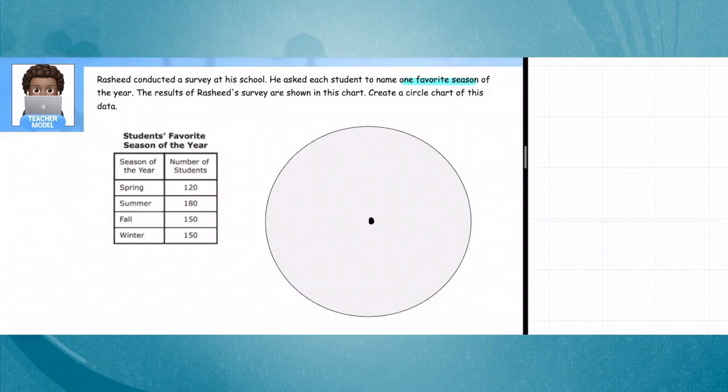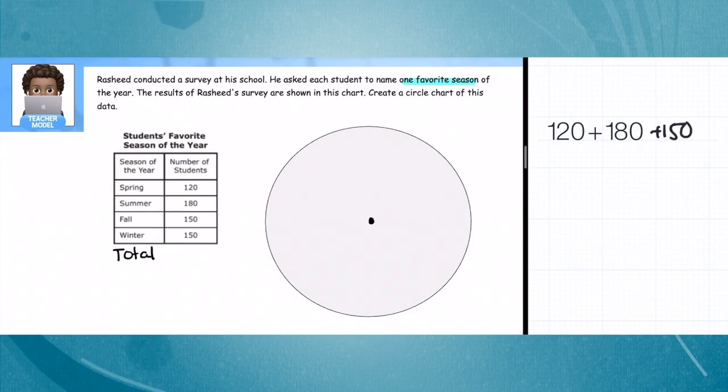We can see for spring, summer, fall, winter—all four—and we see all of his answers in the number of students. The first thing we are definitely going to need is a total. We need to know how many in all so we can find the percentages. Let's add them up: we have 120 plus 180 is 300, plus 150 is 450, plus another 150, so we have 600 in all.